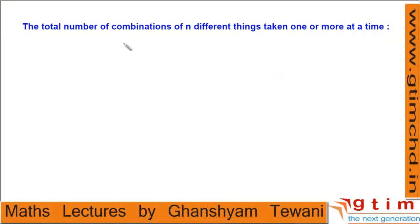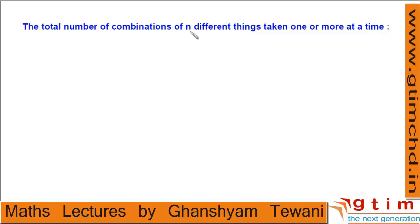Consider the situation when there are combinations of n different things taken one or more at a time. This is equivalent to selecting at least one object from n different objects. If we want to select at least one, then we can select either one or two or three or all objects.